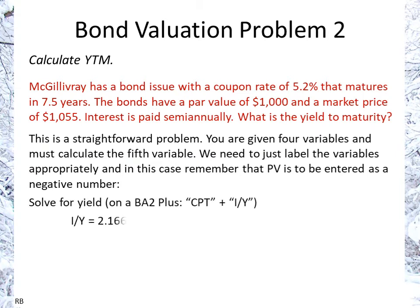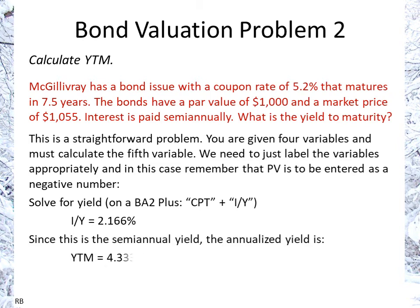So solve for yield. On a BA II Plus, that means you hit Compute and then you hit I/Y. That gives us I/Y equals 2.166% — it just displays 2.166. Now since this is a semi-annual yield, we have to annualize it, so we multiply that by 2 and we get our yield to maturity as an APR of 4.333%.